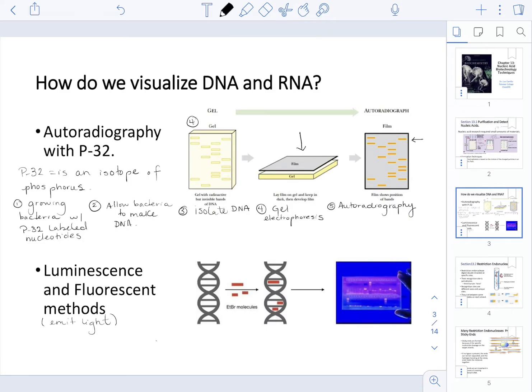Now, when we are doing a luminescent or fluorescent method, understand that we're going to do some of the similar steps. First, we're going to grow bacteria. Second of all, we're going to allow the bacteria to make DNA. Then we're going to isolate that DNA.